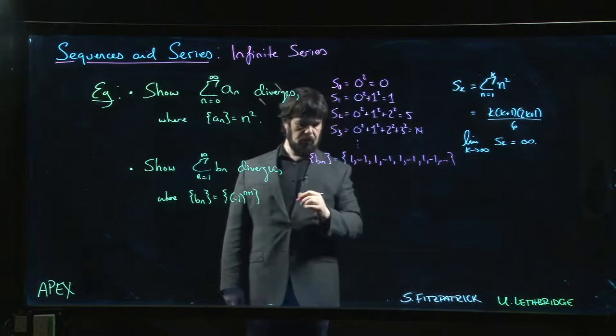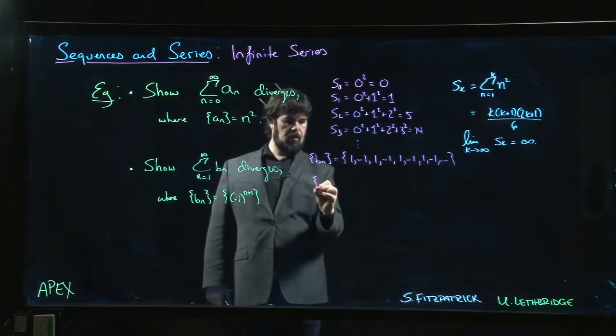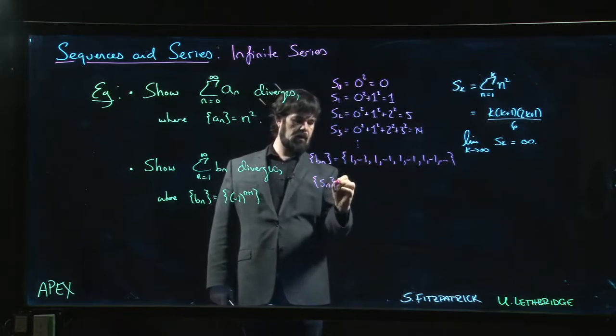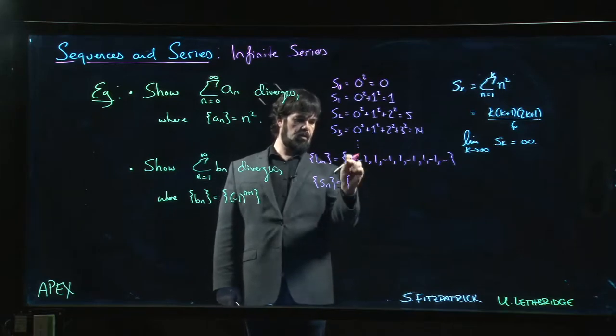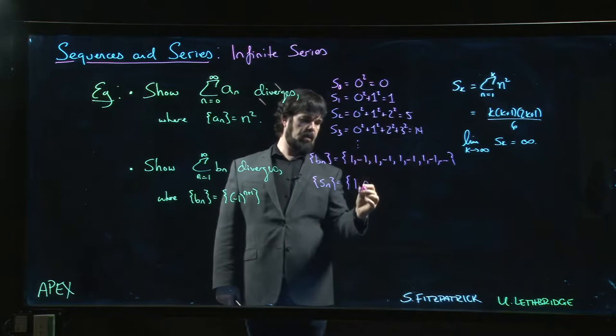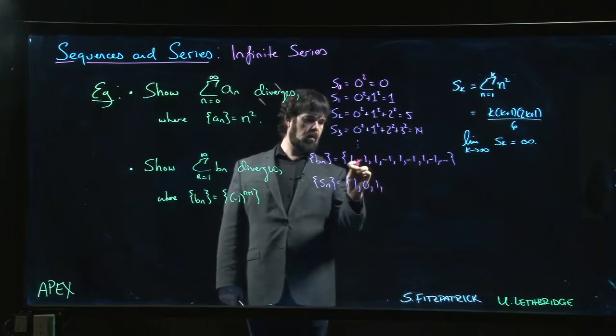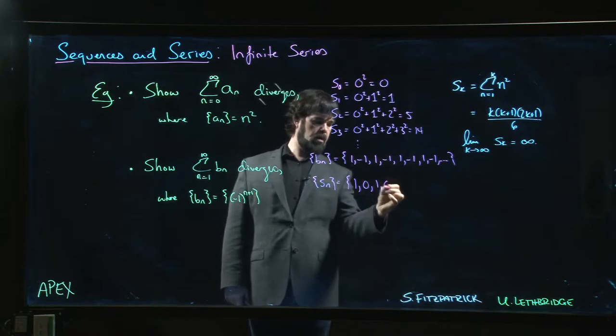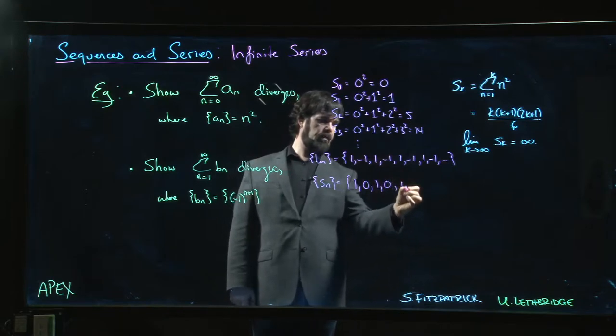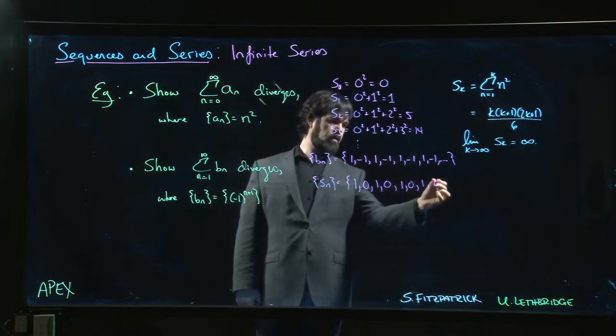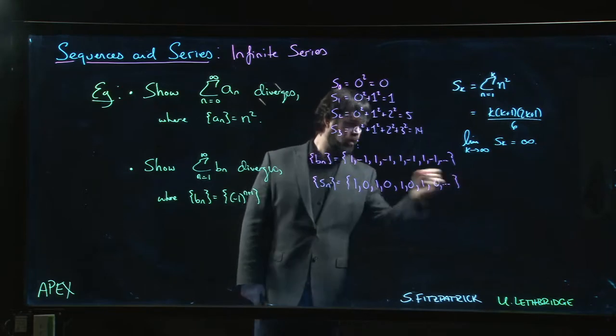What does sn look like? We do one, and then one minus one, we get zero. One minus one plus one is one. One minus one plus one minus one is zero. You can probably guess the pattern—we get something that looks like that.